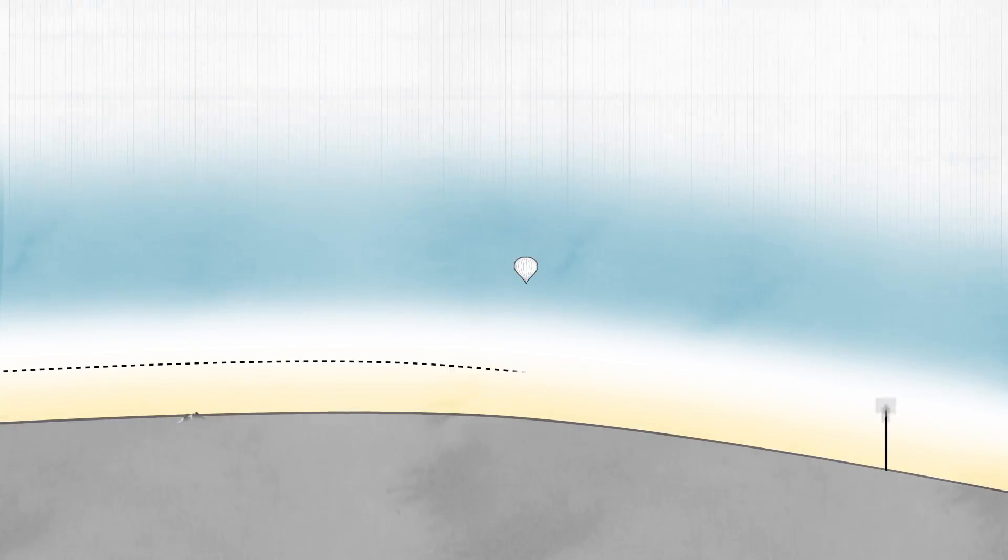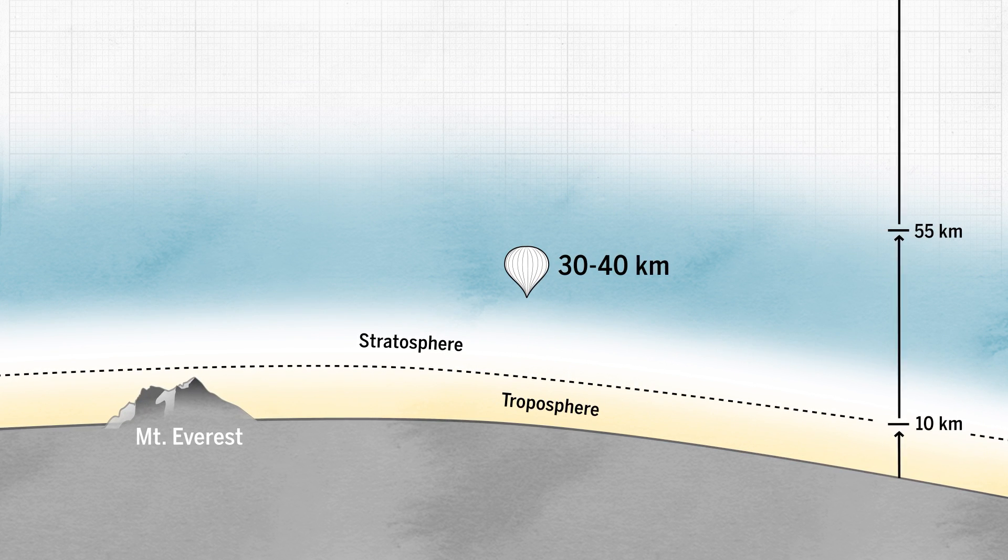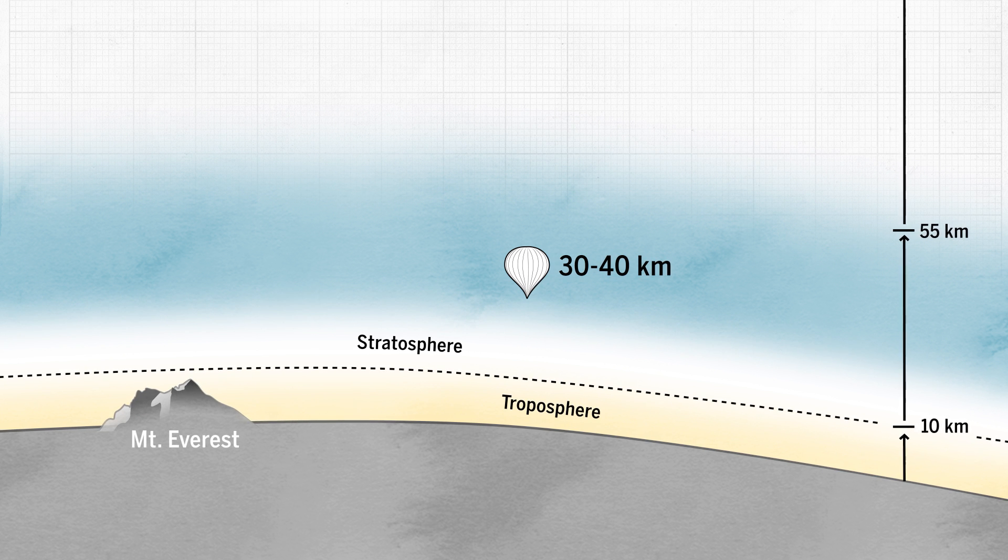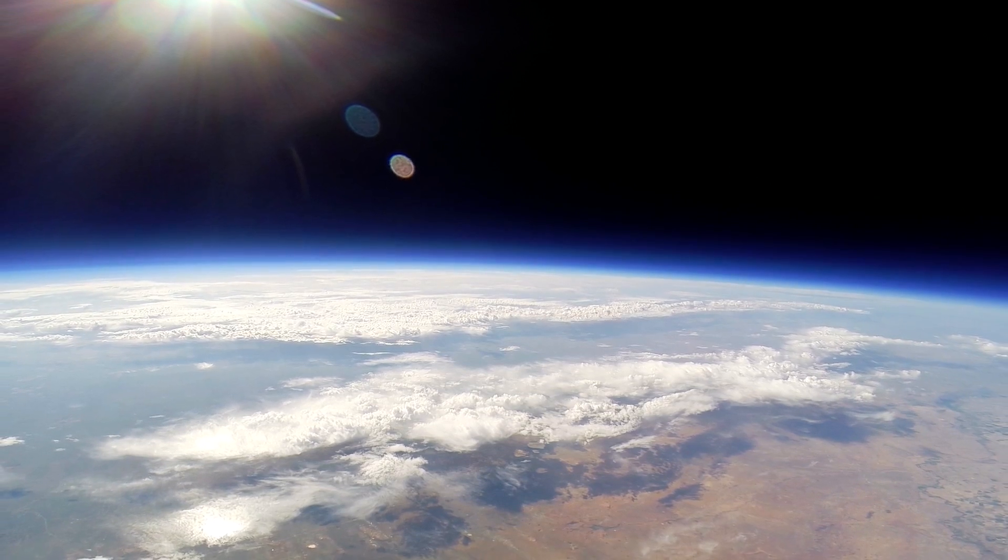A balloon can sit a thousand times closer, in the stratosphere, 30 to 40 kilometers above the Earth, and still be above 99% of the atmosphere with clear views of the stars or wide panoramas of Earth.